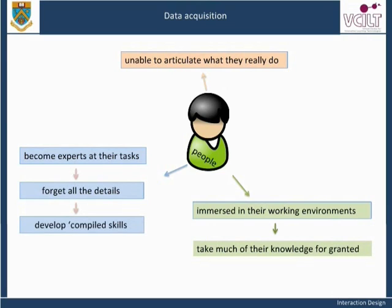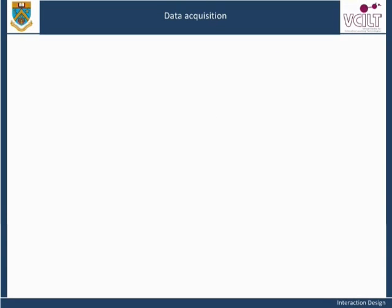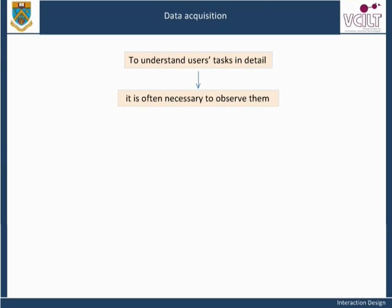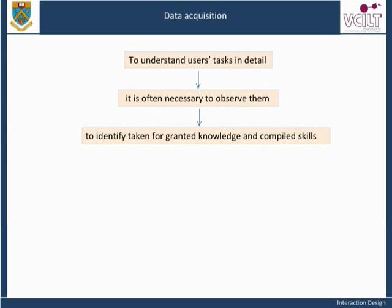To take a simple example that may be familiar to you: if you are driving a manual car, as you pull away from a junction, you will change up the gears. When do you change gear, for example from third to fourth? What is the detailed procedure you follow as you change? Do you take your eyes off the road for any reason? Learner drivers are very aware of the procedure — each foot movement, each glance in the mirror, the act of feeling for the gear lever — these are all deliberate actions. As expertise develops, the conscious awareness of the process diminishes. To understand users' tasks in detail, it is often necessary to observe them, to identify taken-for-granted knowledge and compiled skills.